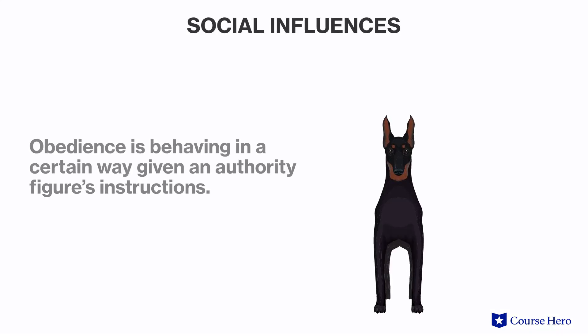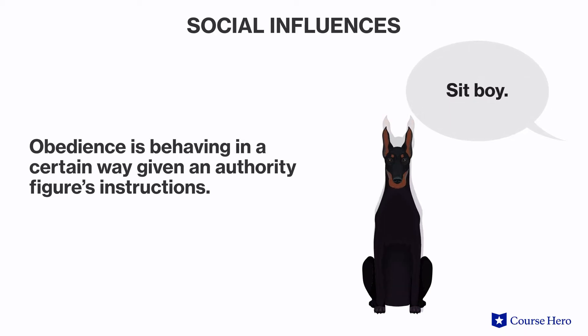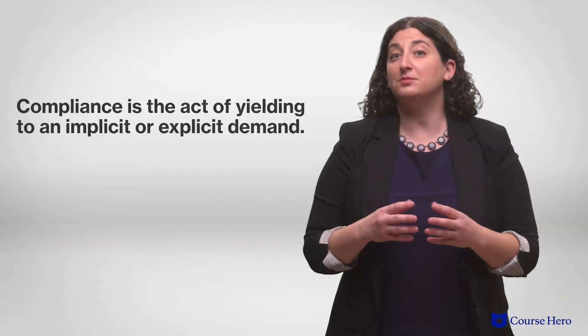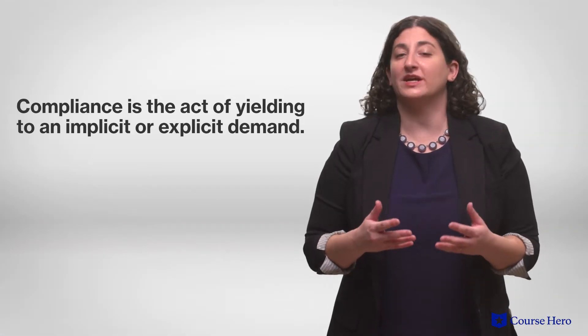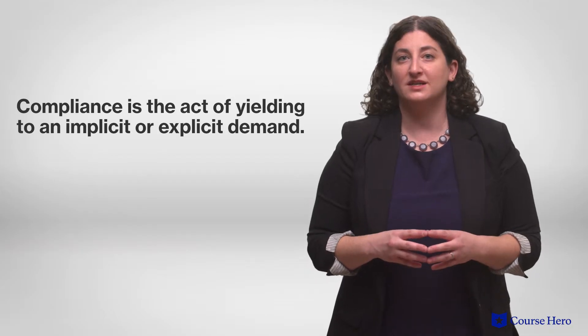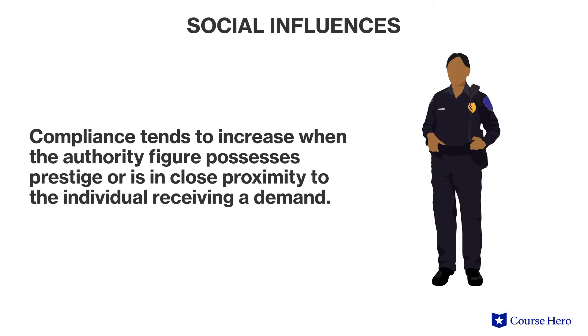Other forms of social influence are obedience — behaving in a certain way given an authority figure's instructions — and compliance, the act of yielding to an implicit or explicit demand. Individuals often comply with an authority figure's request because they're concerned about consequences if they refuse. In fact, compliance tends to increase when the authority figure possesses prestige, or is in close proximity to the individual receiving a demand, when the risks of nonconformity would be greatest.